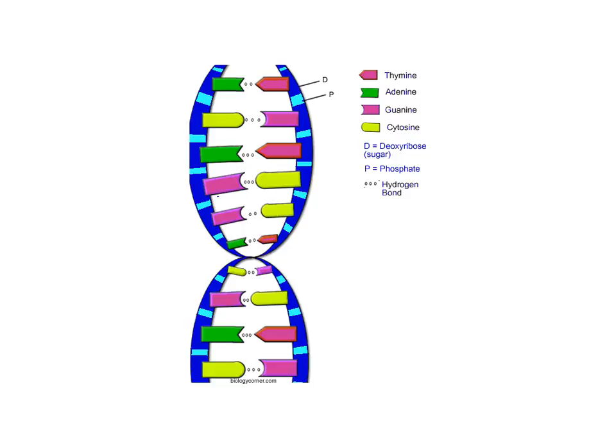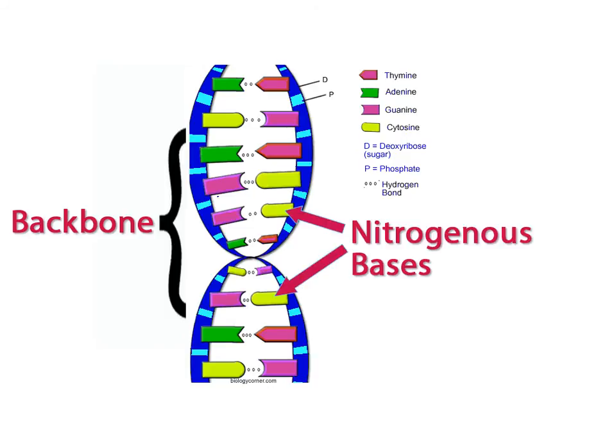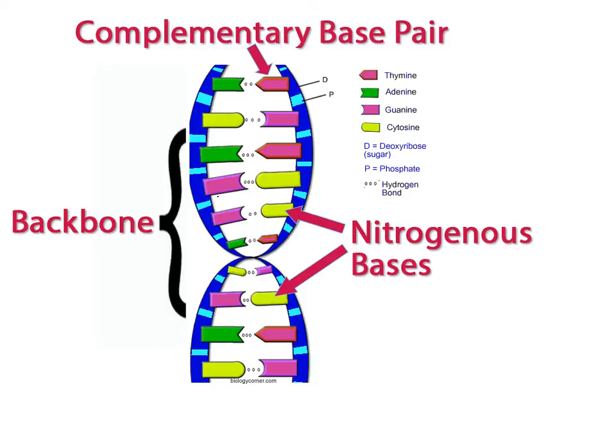The alternating sugar phosphate molecules form the backbone of each strand in the DNA double helix. The nitrogenous bases extend out from the backbone toward the center of the double helix, forming the rungs of the DNA ladder. And each base in one strand is matched with a complementary base in the other strand in accordance with the base pairing rules. Adenine always bonds with thymine and guanine always bonds with cytosine.